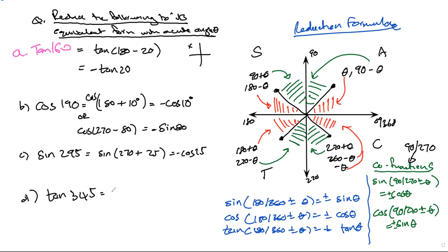tan(345°), for example, would be tan(360° - 15°). That's going to be in this quadrant, which is the cos quadrant. So cos is negative, so this will be negative tan(15°). But remember, you can always have a 270 in there as well.